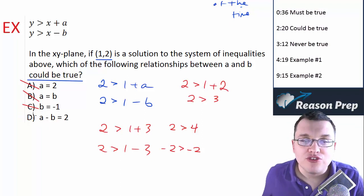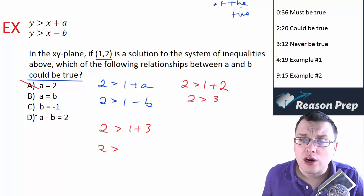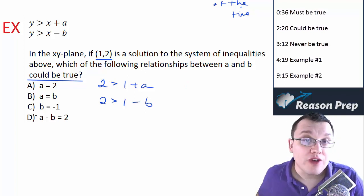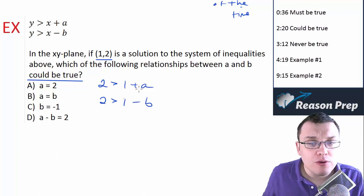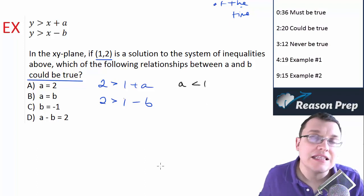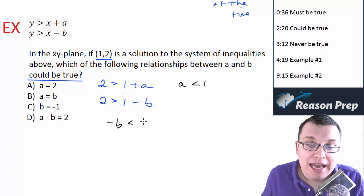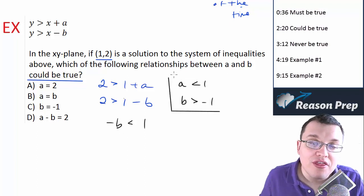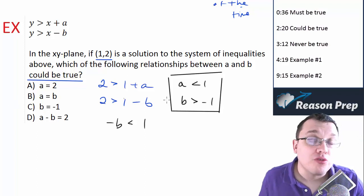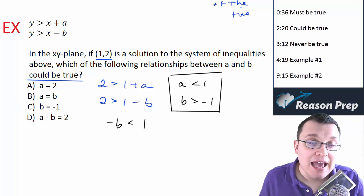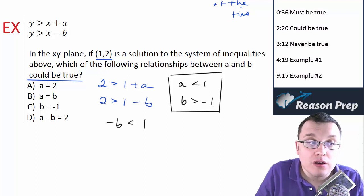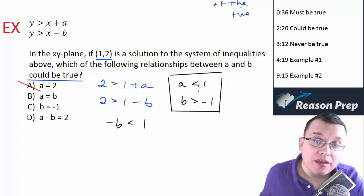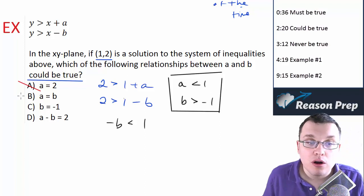This is the issue with testing points — you don't really know for sure until you've either eliminated three choices and you're left with one, or you prove it directly. So let's manipulate the inequalities. Subtracting 1 from both sides of the first gives a is less than 1. For the second, subtracting 1 gives negative b is less than 1; dividing both sides by negative 1 gives b is greater than negative 1. With these conclusions, we can evaluate the choices.